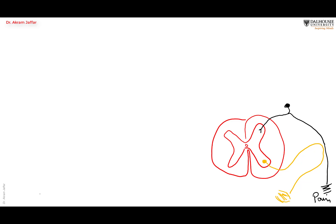In the pain pathway — this sensory pathway — we have three neurons involved. This is the first order neuron. The second order neuron is located in the posterior horn of the spinal cord; that's gray matter, full of nerve cell bodies. The axon of this second order neuron will cross the midline and ascend in the white matter — this is what we call the lateral funiculus.